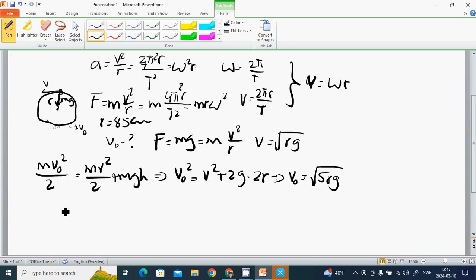This is the square root of 5 times 0.85 times 10, which is almost 6.5 meters per second.